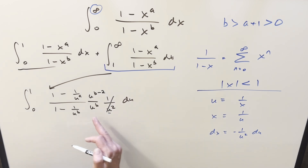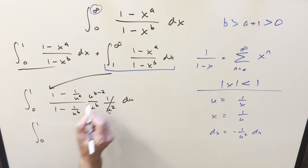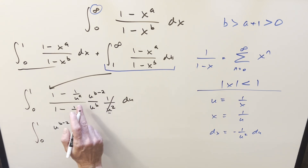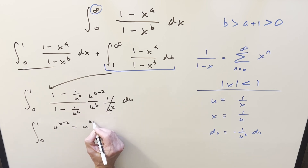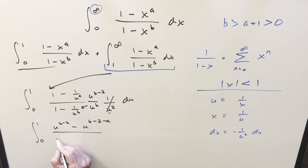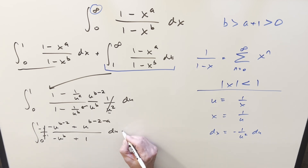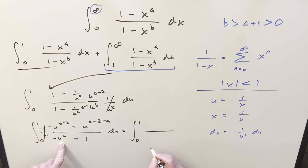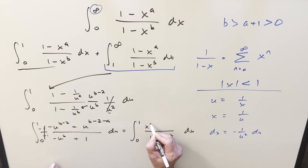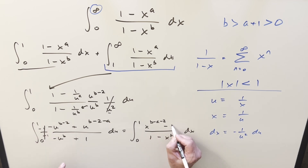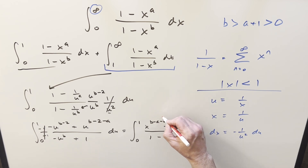Multiplying in u to the b in the denominator and combining with the same base in the numerator gives u to the (b minus 2) in the numerator, then u to the (b minus 2 minus a), and distributing gives u to the (b minus 1) du. Flipping the overall sign and reordering, then renaming the dummy variable back to x, the transformed integral has (1 minus x to the b) in the denominator, with numerator x to the (b minus a minus 2) minus x to the (b minus 2).